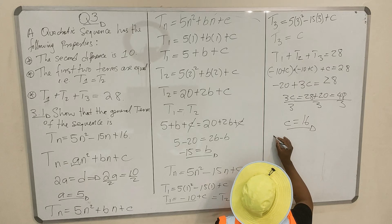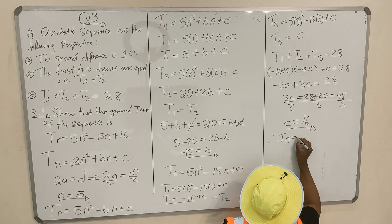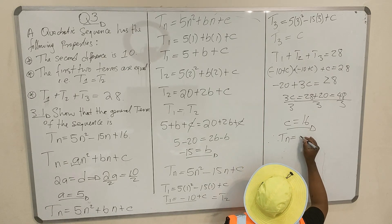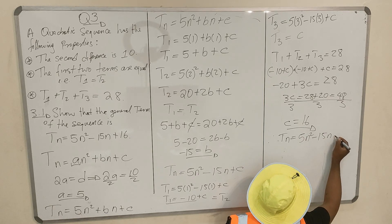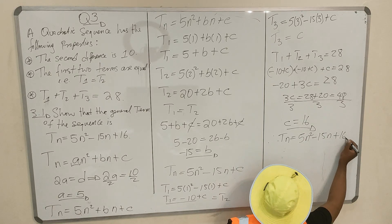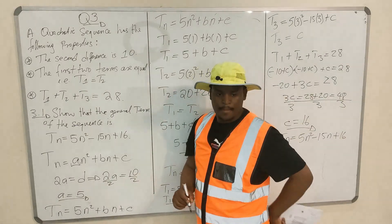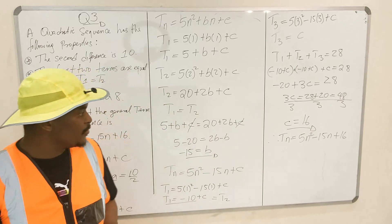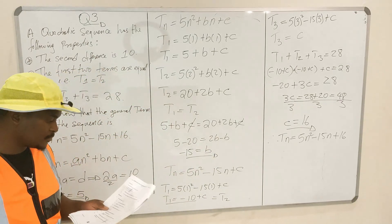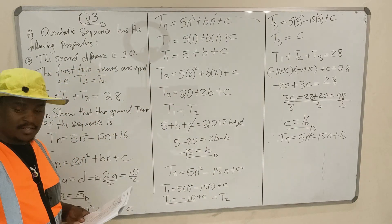Therefore, Tₙ = 5n² minus 15n plus 16. That is what we were trying to prove. You have found your value of C and you are done with this part of the question.